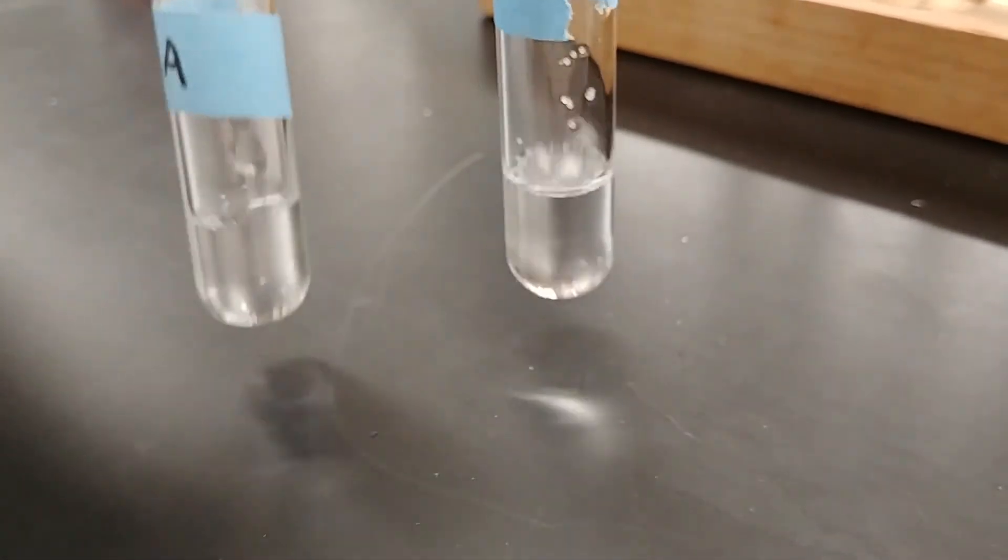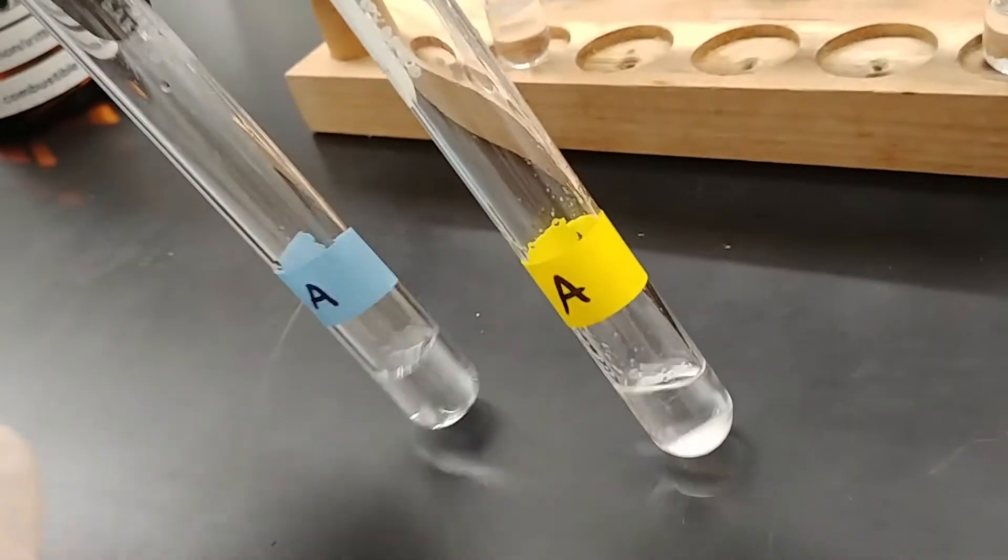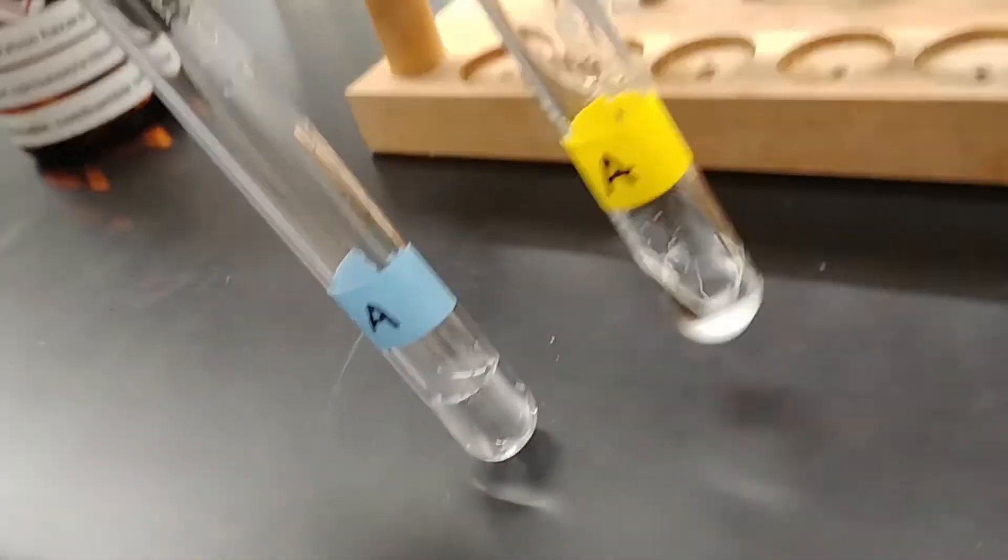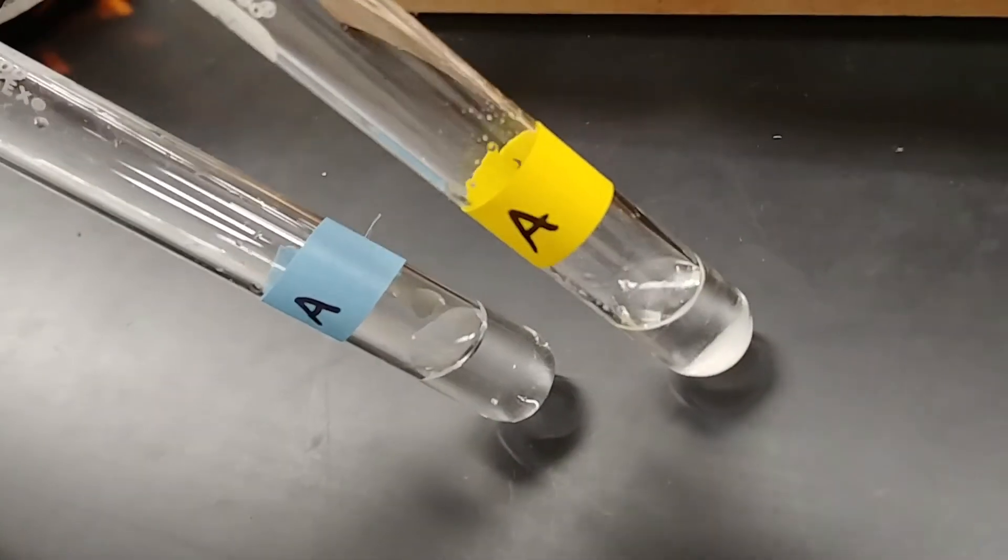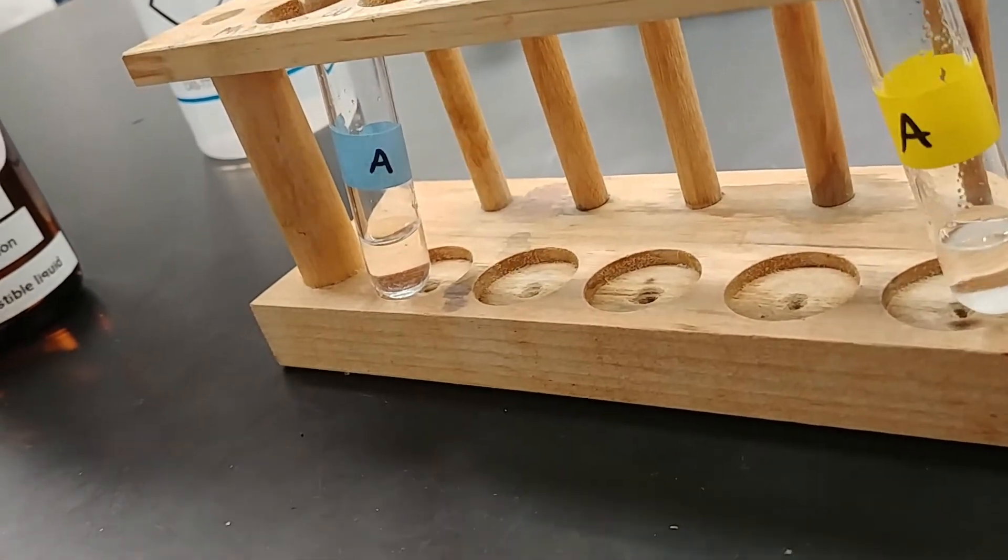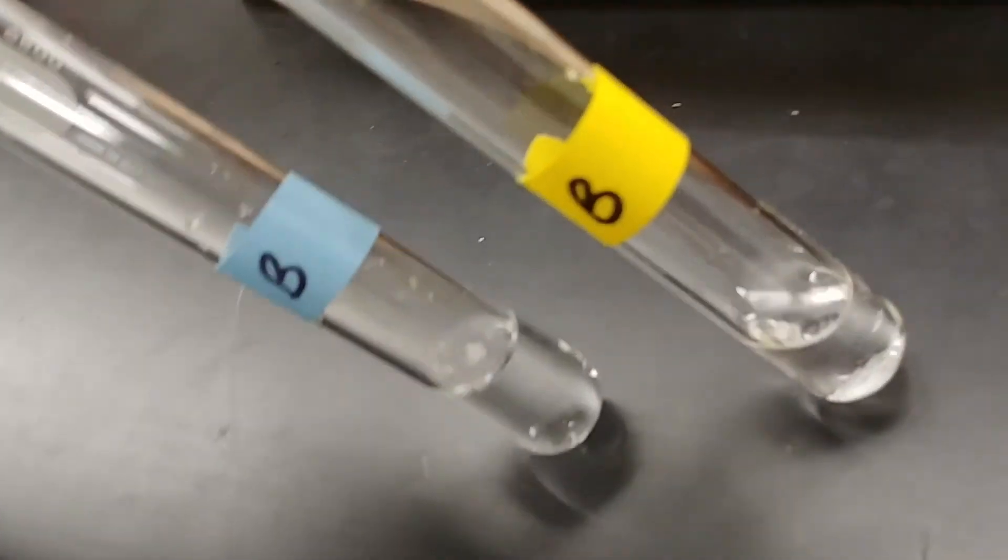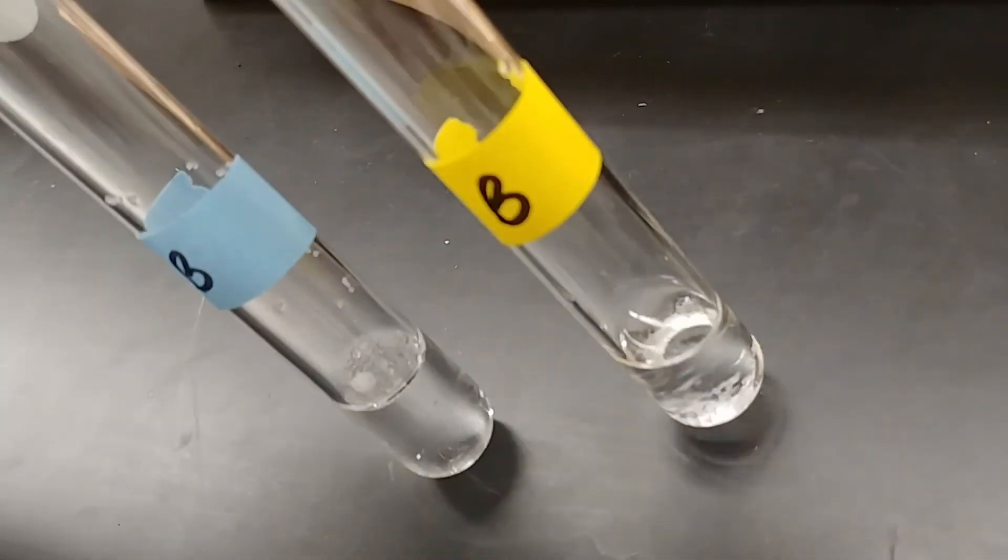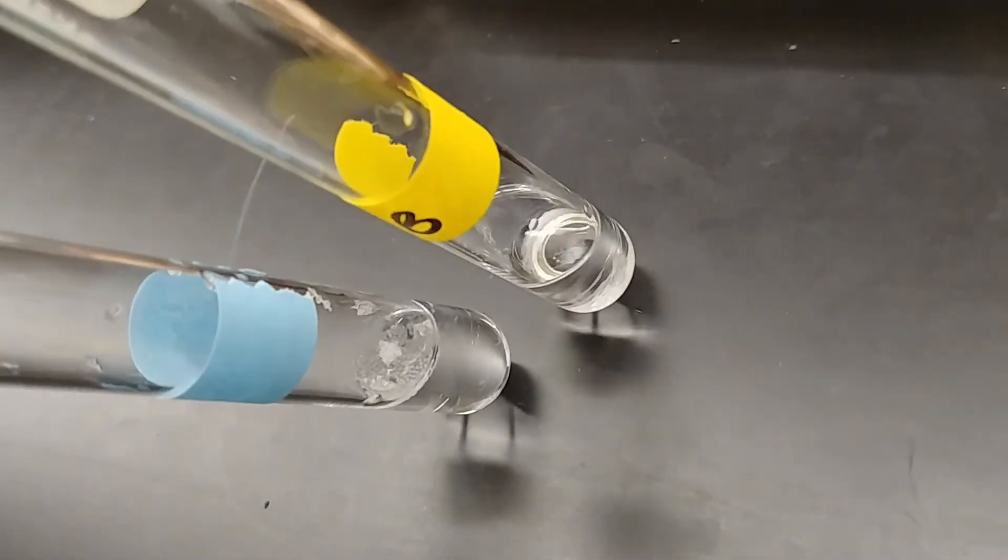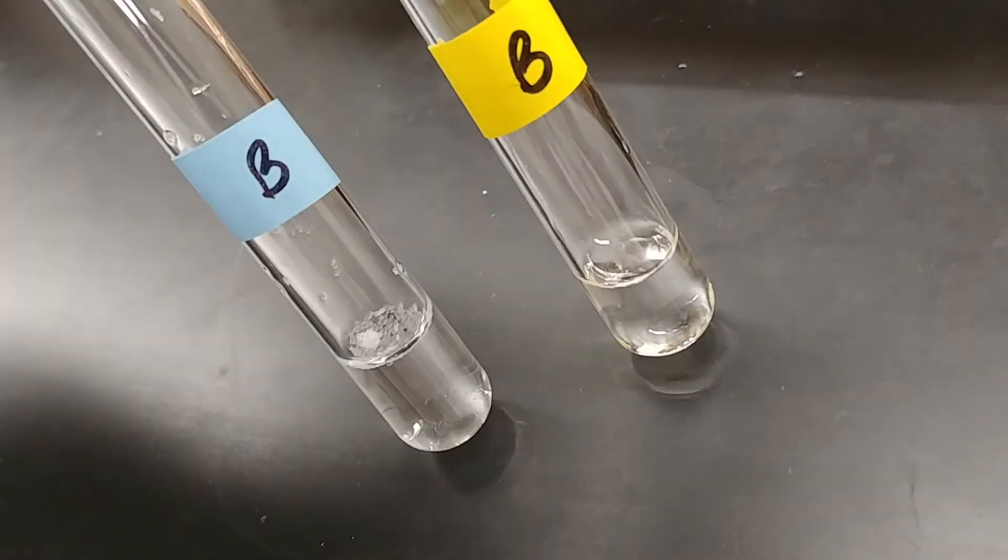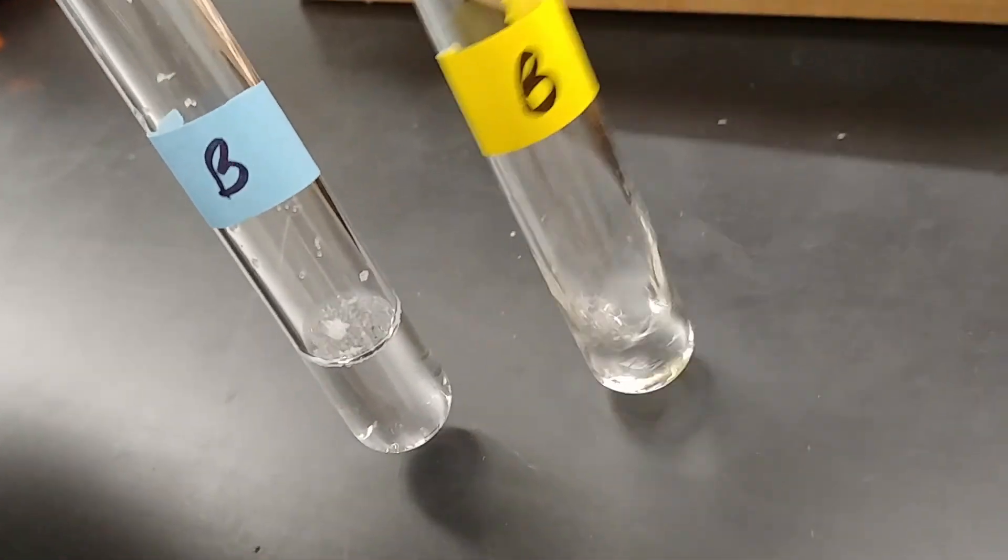So for comparison again, we'll take a look at cyclohexane versus water. So we'll compare unknown A in the water, unknown A in the cyclohexane. Which solvent did a better job of dissolving our solid, our unknown A? And then comparing cyclohexane and water with unknown B, which did a better job of dissolving. We'll see if we can tell which one did a better job of dissolving unknown B.